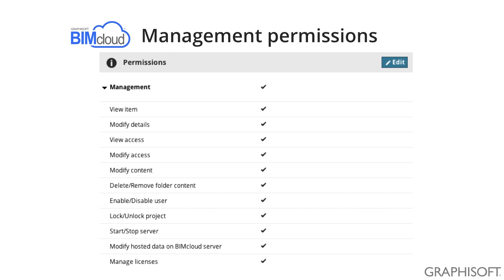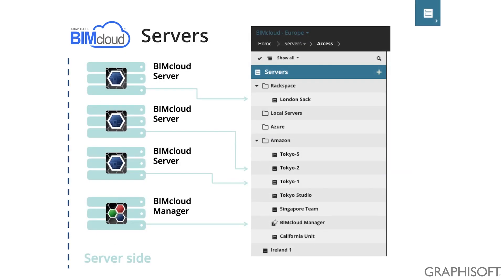As you can see at the bottom, you even have a permission that you can assign to users who are allowed to manage licenses on the server. The servers can be located anywhere in the world and can still be connected to the same BIMcloud system. Some of the servers are located on Amazon's virtual computers, others are in London, and there are also a few inside the office.